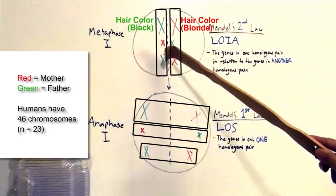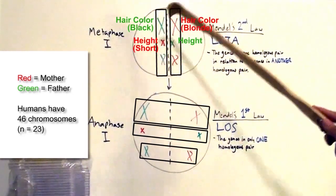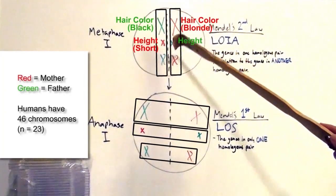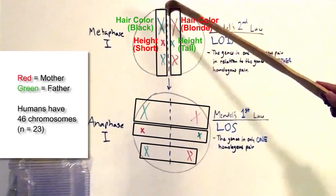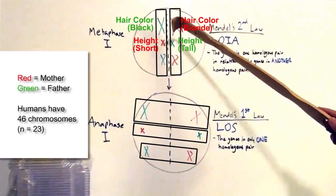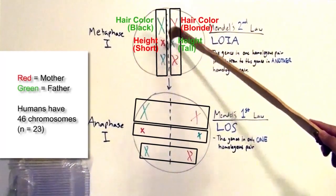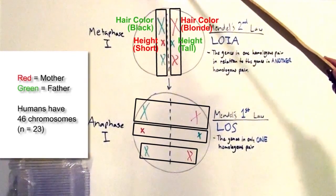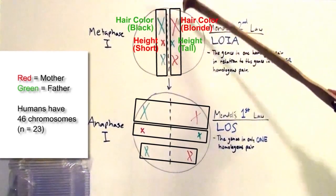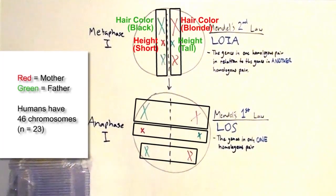Now let's suppose chromosome pair two has a gene for height. Mom's allele for chromosome two codes for shortness; dad's allele for chromosome two codes for tallness. How the alleles for hair color mix and match themselves on which side they want to be on has absolutely nothing to do with how the alleles for height mix and match which side they want to be on. They assort themselves independently of each other. The alleles for hair color assort themselves independently of the alleles for height. When we talk about the law of independent assortment, we need to think about multiple homologous pairs involved.